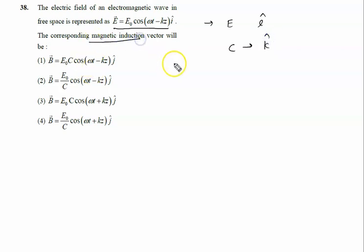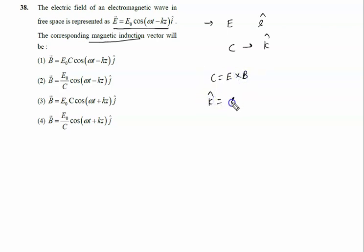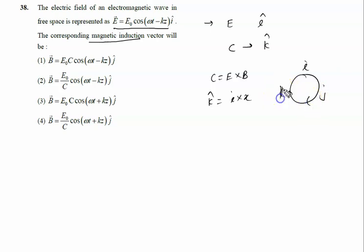To find the corresponding magnetic induction vector, we first determine its direction. We know c = E × B, and c is along k̂. So we have k̂ = î × ? Using the cyclic relation — i, j, k — î × ĵ = k̂. So k̂ equals î × ĵ, which means the magnetic field will be along the ĵ axis.